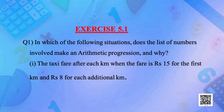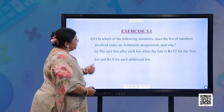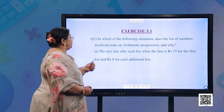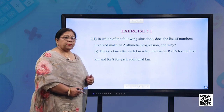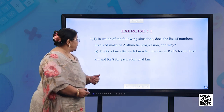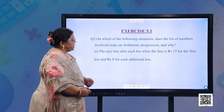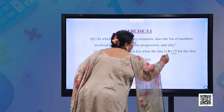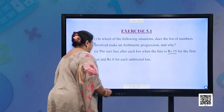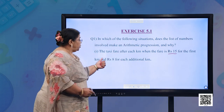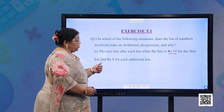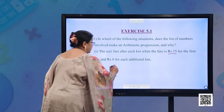Now let us do Exercise 5.1, Question 1: In which of the following situations does the list of numbers involved make an arithmetic progression and why? First: the taxi fare after each kilometer, when the fare is ₹15 for the first kilometer and ₹8 for each additional kilometer. Can you guess — is it an AP? Yes.